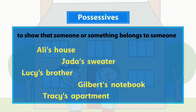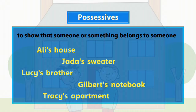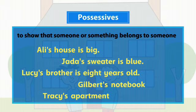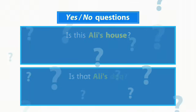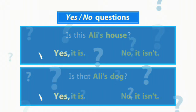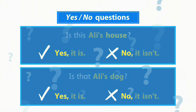And then the person or thing that belongs to him or her. We form simple present sentences with possessives like this. We ask yes-no questions using possessives like this. This is the same for all singular subjects. We usually answer using short answers.